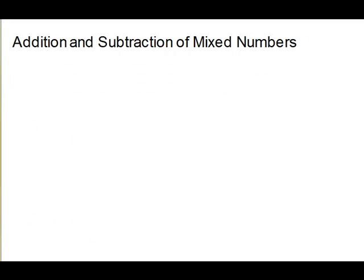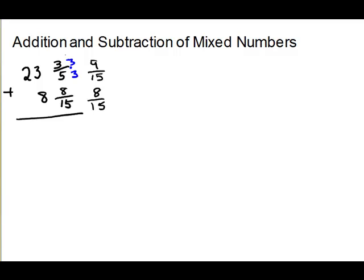For addition and subtraction of mixed numbers we have two techniques. We can use an old arithmetic vertical style working on the fractions and the whole numbers separately, or we can work in horizontal notation changing everything to improper fractions. In vertical style, remember to add fractions you need a common denominator. Looking at the fractions, 15 will work. For the first fraction with a denominator of 5, multiply numerator and denominator by 3 to get 9 fifteenths. The other fraction already has fifteenths.